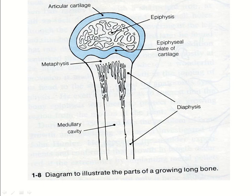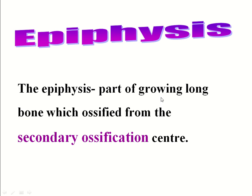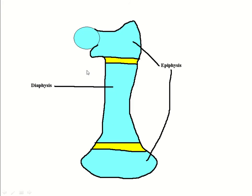Referring to the visual: this is epiphysis, this is epiphysis, this is epiphysis, this is metaphysis, and this is diaphysis. The epiphysis is the part of the growing long bone which ossifies from the secondary ossification center.